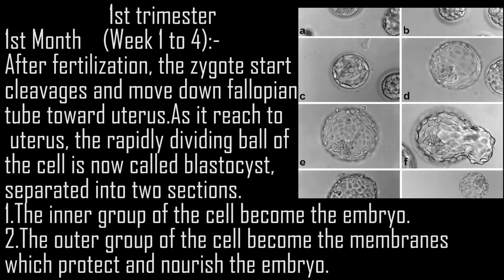First trimester, first month, week 1-4. After fertilization, the zygote starts cleavage and moves down the fallopian tube toward the uterus. As it reaches the uterus, the rapidly dividing ball of cells is now called a blastocyst, separated into two sections.